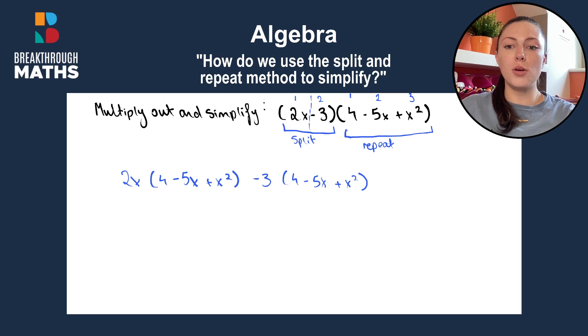And all we have to do now is multiply. So we have 2x by 4, which is 8x. We have 2x by minus 5x, which is minus 10x squared. 2x by plus x squared is plus 2x cubed. And then minus 3 by plus 4 is minus 12. Minus 3 by minus 5x is plus 15x. And minus 3 by plus x squared is minus 3x squared.